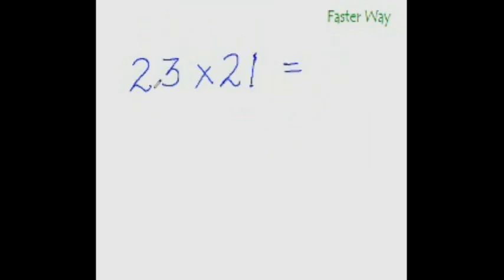What is 23 times 21? Again, we are taking the base as 10. 21 is plus 11 more than the base and 23 is plus 13 more than the base. So 11 plus 23 is 34. I have used the jumping 10 technique. Now one more place to go.